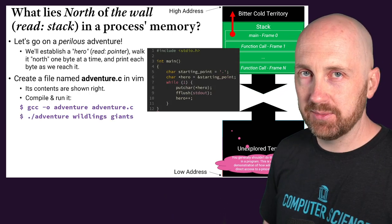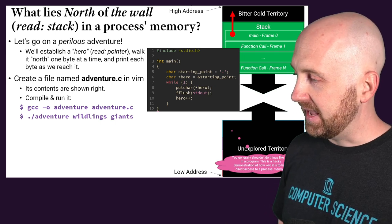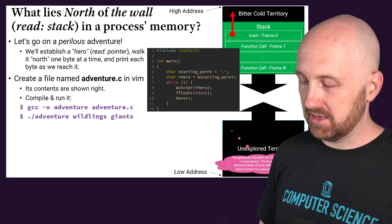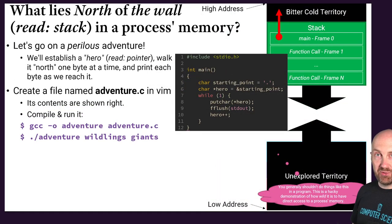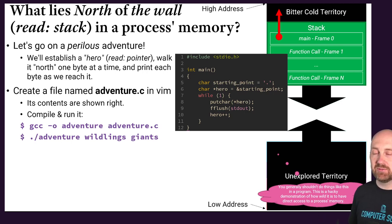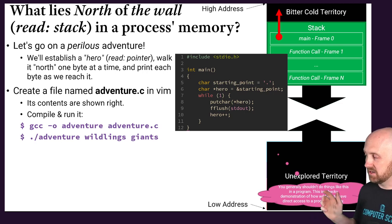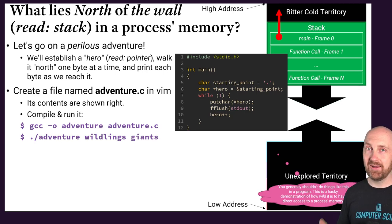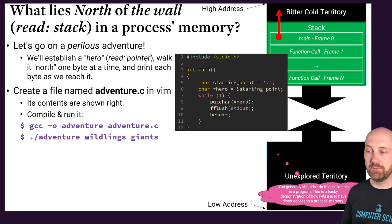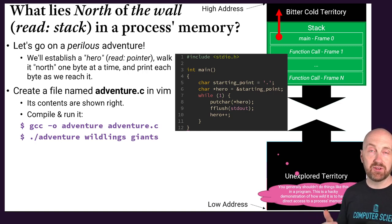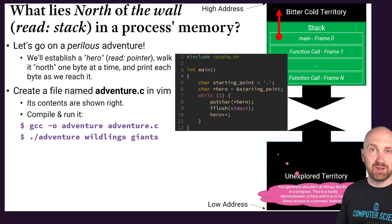Set up a file named adventure.c. We're going to have a starting point which is a character holding the ASCII character for the period, and a pointer to that which will be our hero. It's going to begin at the address of that character. Since starting point is a local automatic variable inside main, it's going to be allocated in main's frame on our call stack.